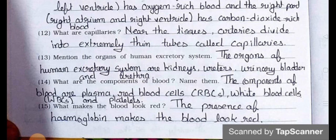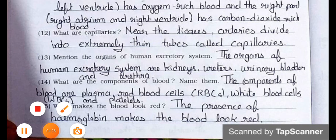Question number 15: What makes the blood look red? Answer: The presence of hemoglobin makes the blood look red.